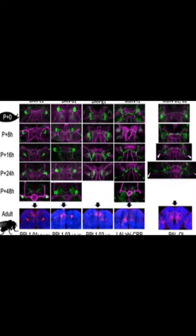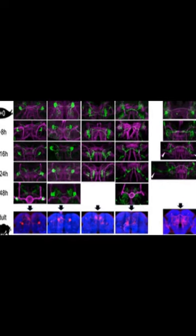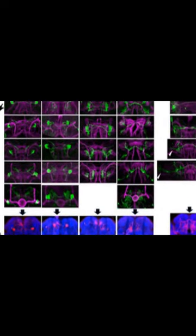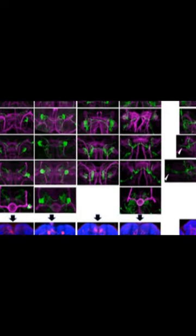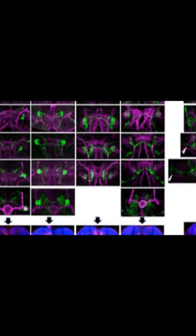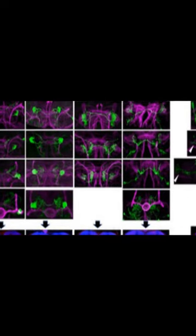The adult MB is able to process sensory inputs and control motor outputs, but it does not retain any memories from the larval stage. Instead, the adult MB is a completely new structure, built up from the larval MB and the newly created neurons.